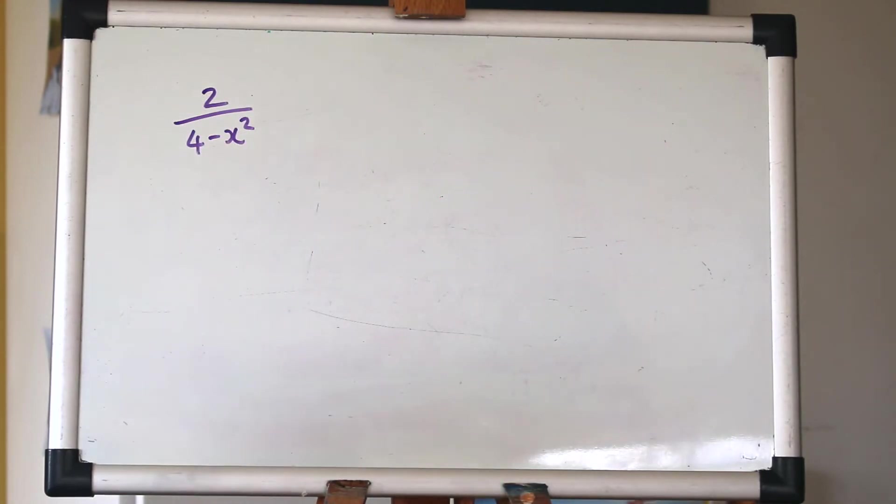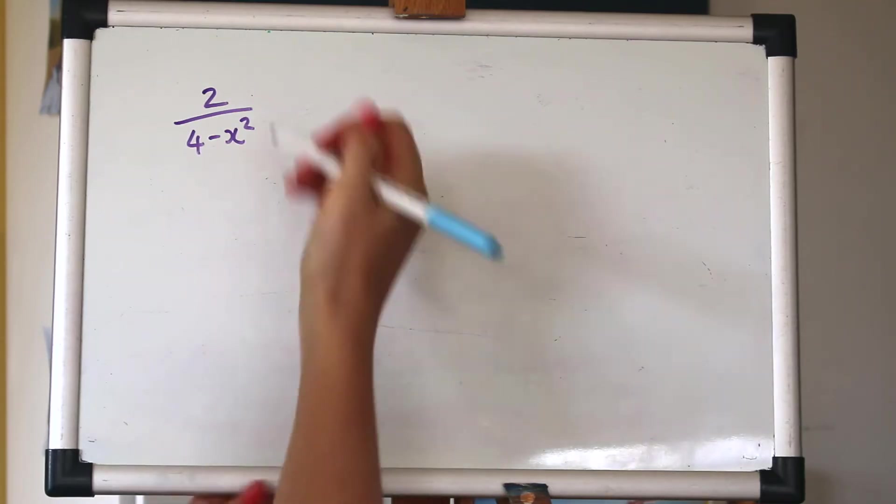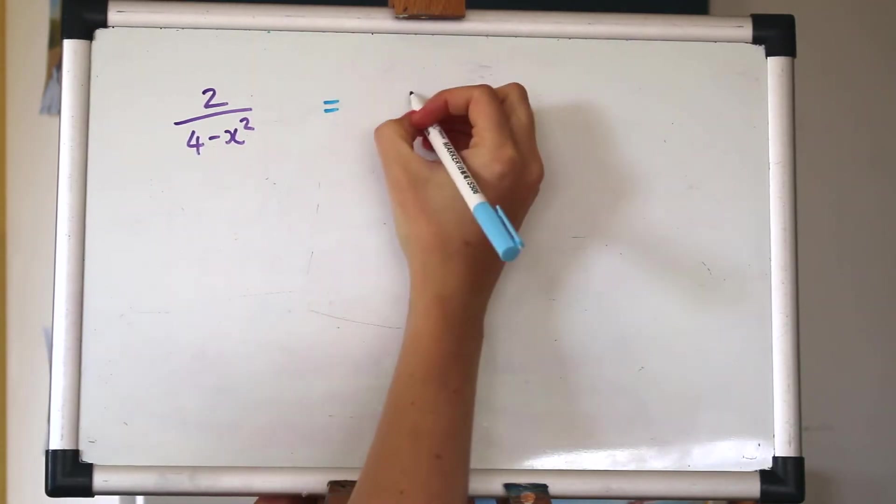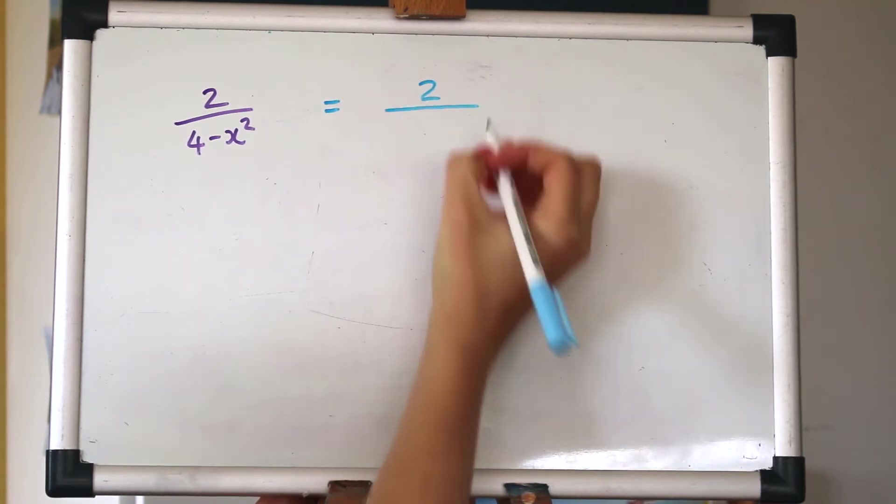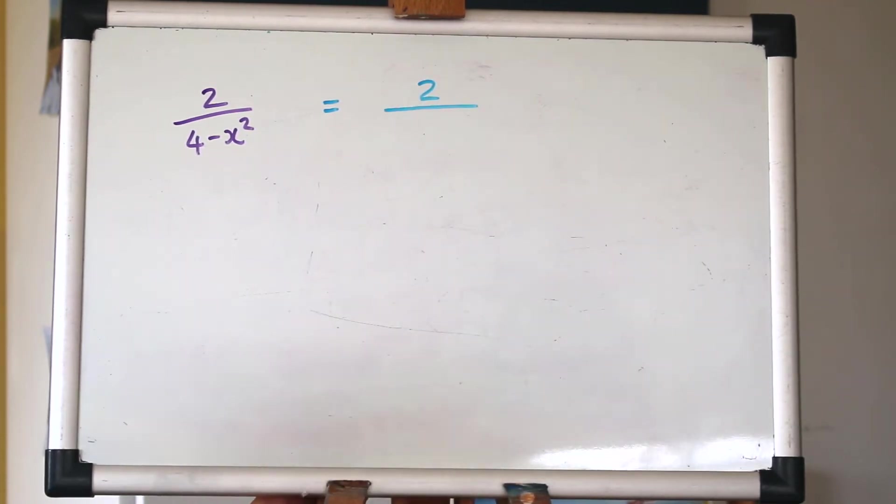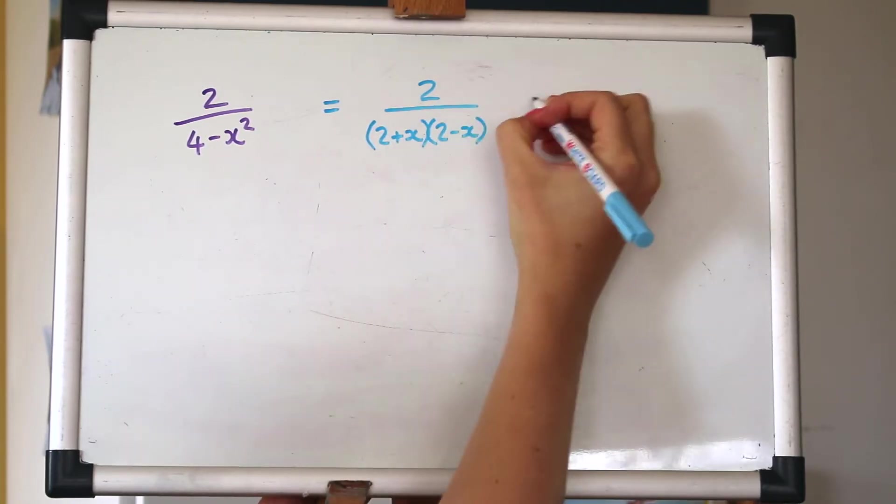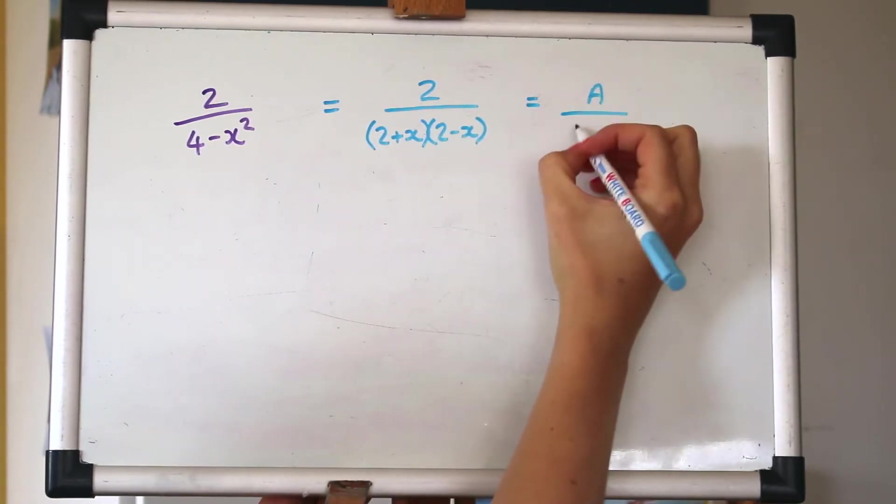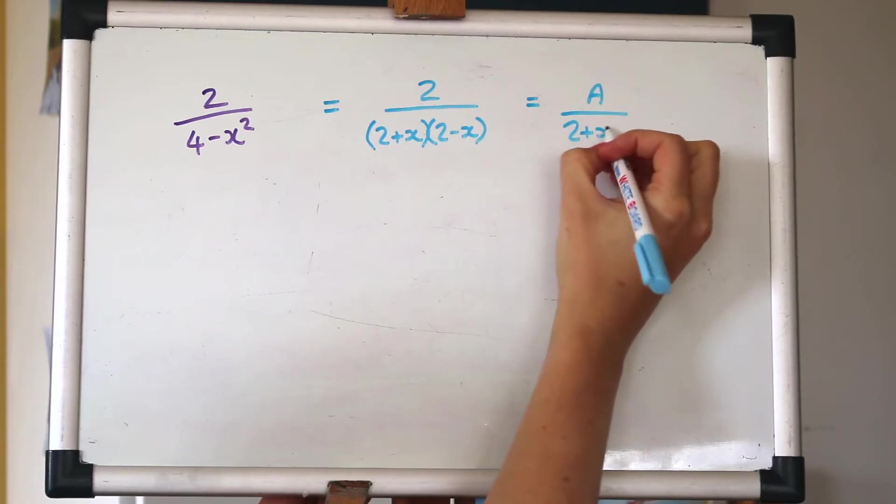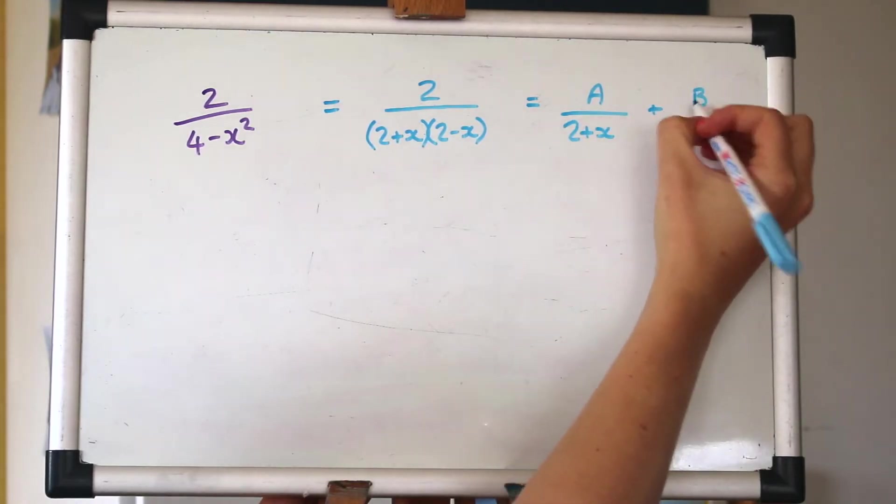Okay, let's have a go at a second example. Again, I'm going to start off by factorising the bottom. Hopefully you can spot how to do that. Do have a go. It's a difference of two squares. So again, I'm going to make that just with a and b, just split that up at first.